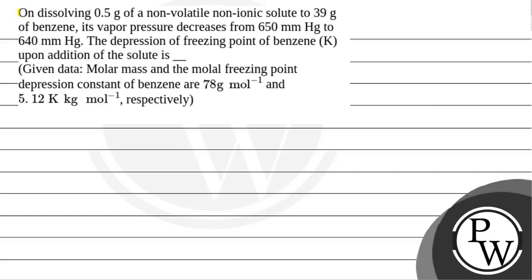Let us see the question: dissolving 0.5 grams of non-volatile, non-ionic solute into 39 grams of benzene. The vapor pressure decreased from 650 mmHg to 640 mmHg. Find the depression of freezing point of benzene upon addition of the solute. The molar mass of benzene is 78 g/mol and the molar freezing point depression constant Kf is 5.12 K·kg/mol.